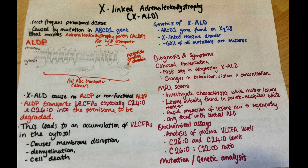The ABCD1 gene is found at Xq28 and is X-linked recessive. This causes it to affect males more than females, as they only need a mutation in their one X chromosome to cause the disease, whereas women need mutations in both, although some female carriers can present milder symptoms of XALD. The mutations at the ABCD1 gene vary, with around 60% caused by missense mutations. However, there has been no correlation found between the genotype of the mutation and the phenotype of XALD.